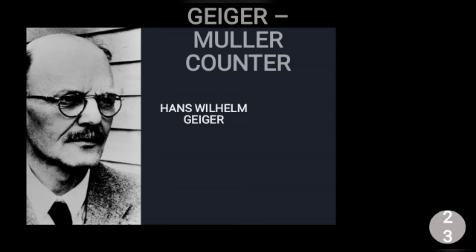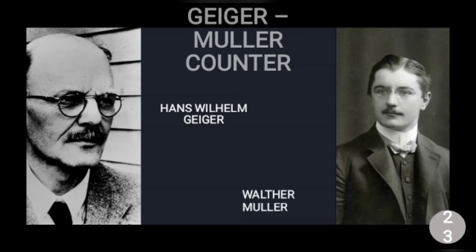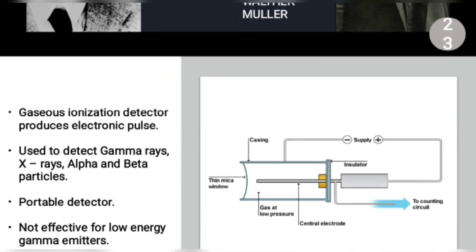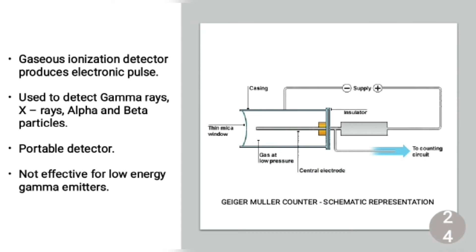Moving on to the Geiger Muller counter — the name combines the names of its inventors. Hans Willem Geiger was a German physicist and teacher at the University of Kiel, and Walter Muller was his student; together they invented the Geiger Muller counter. The instrument is a tube connected to a detector, filled with an inert gas at low pressure to which a high voltage is applied. Due to the ionization effect, the gas inside becomes conductive, detected as an electrical pulse.